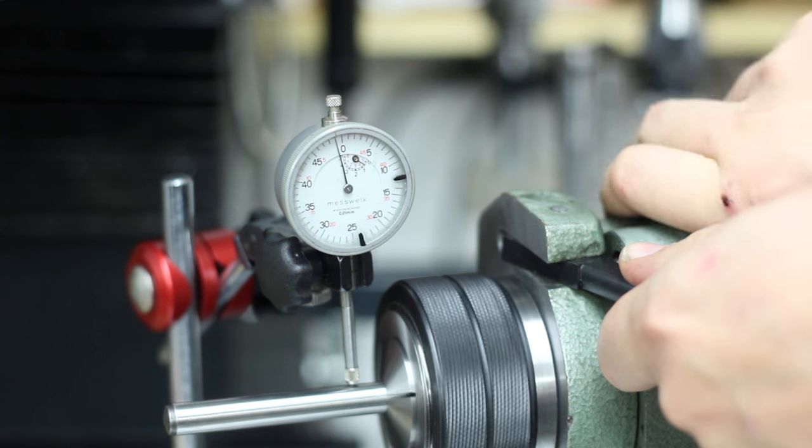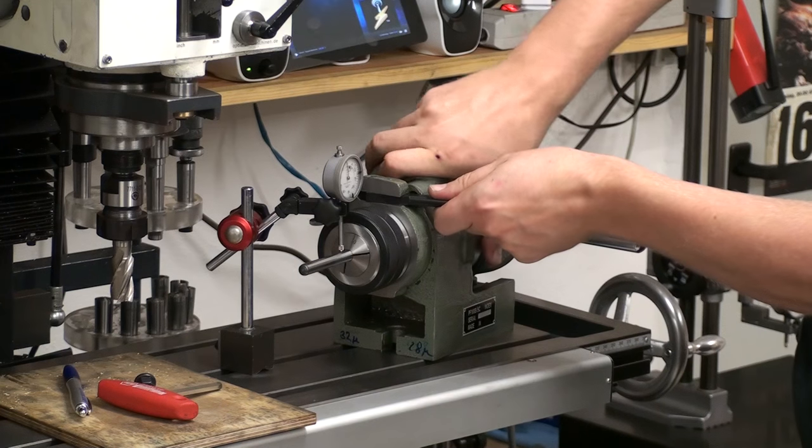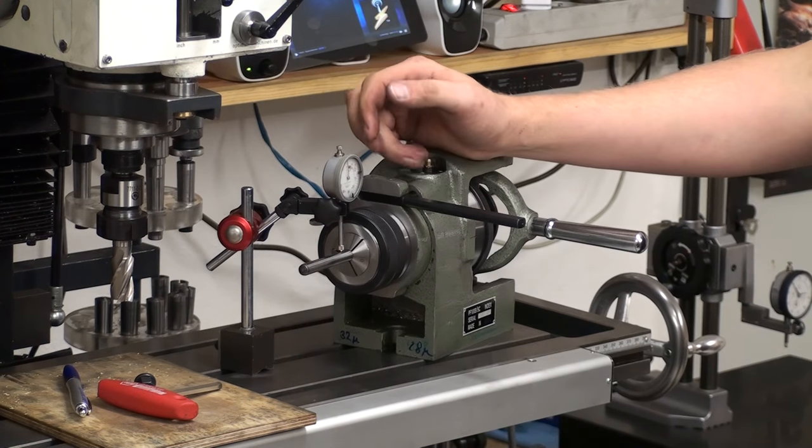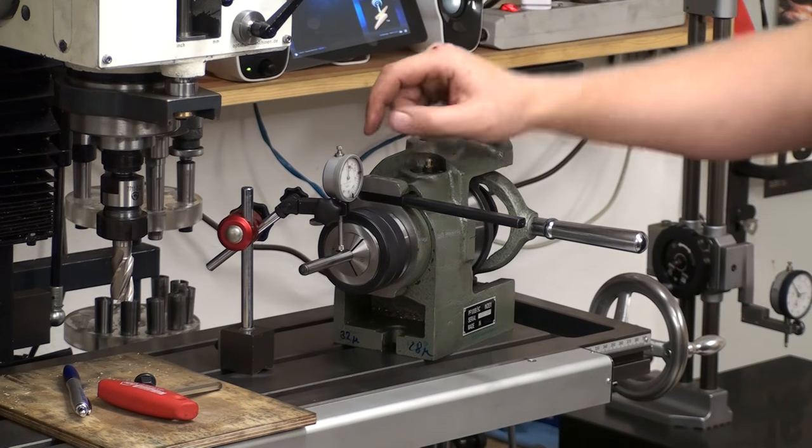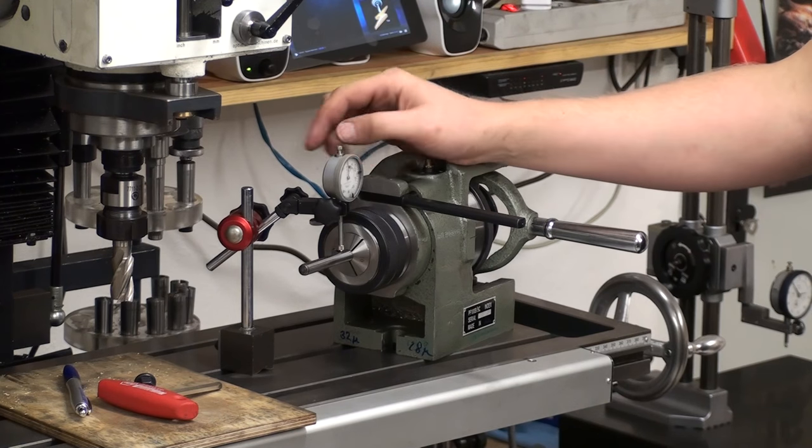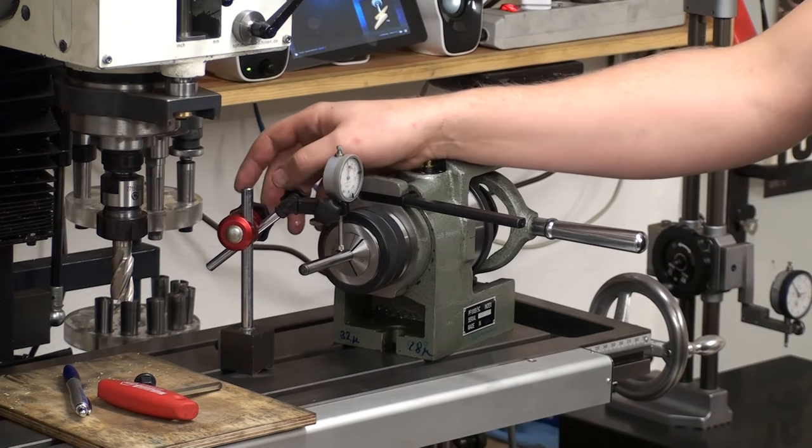And as you can see, there is not much movement while I'm turning. Let's call it for sake of whatever one hundredths of a millimeter runout directly behind the collet.